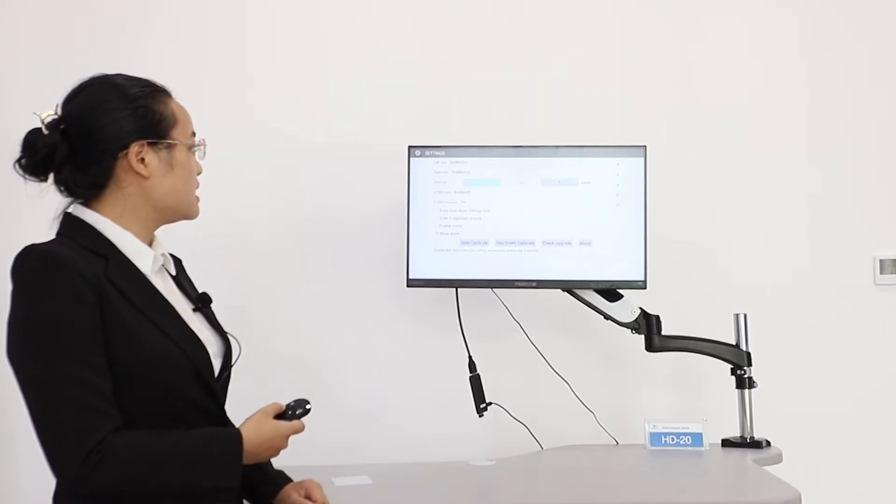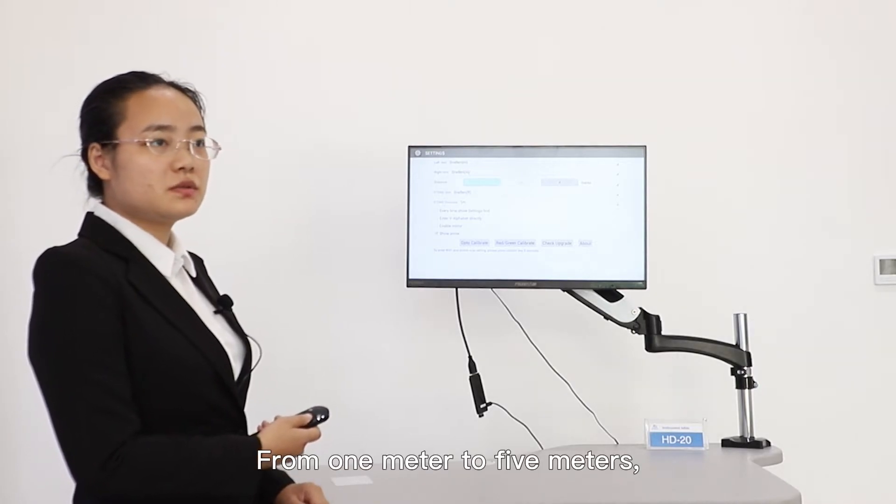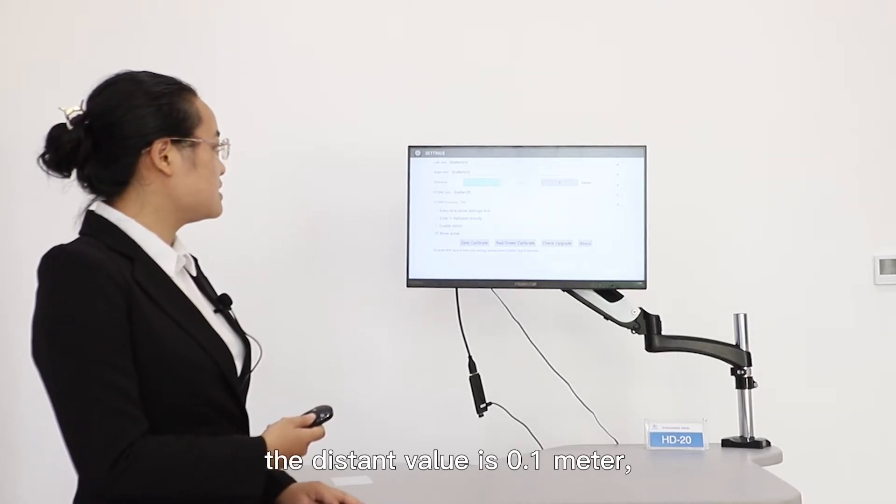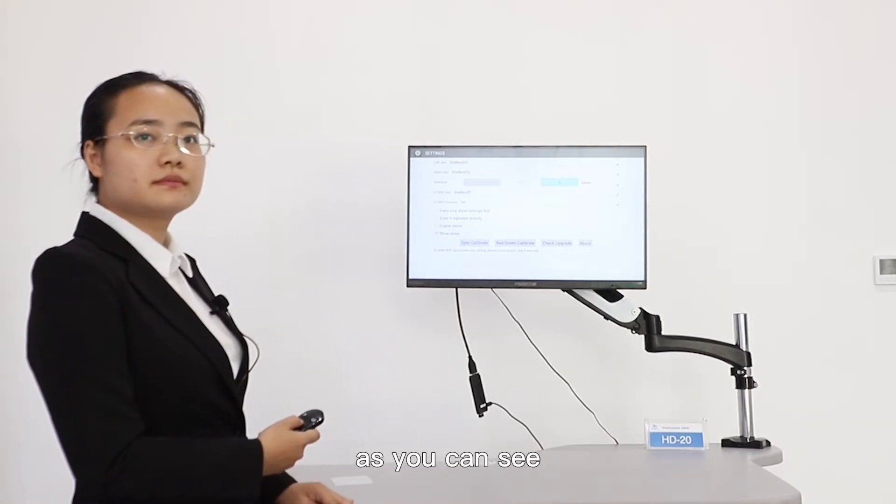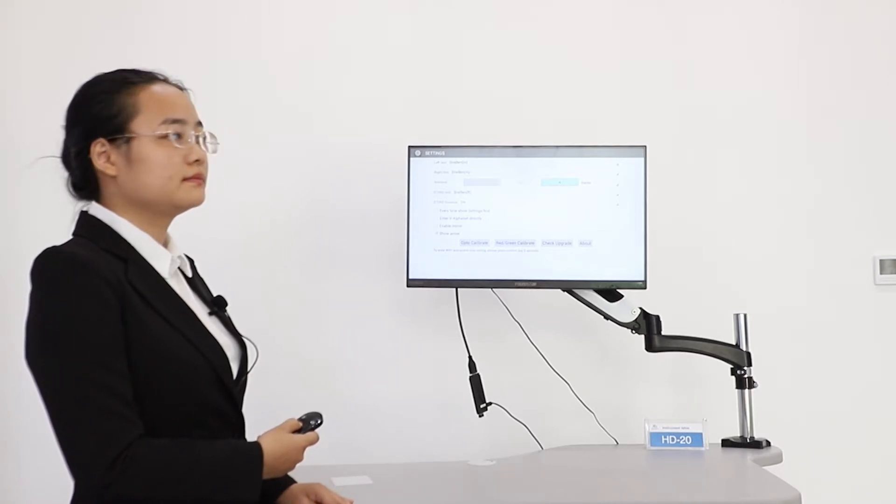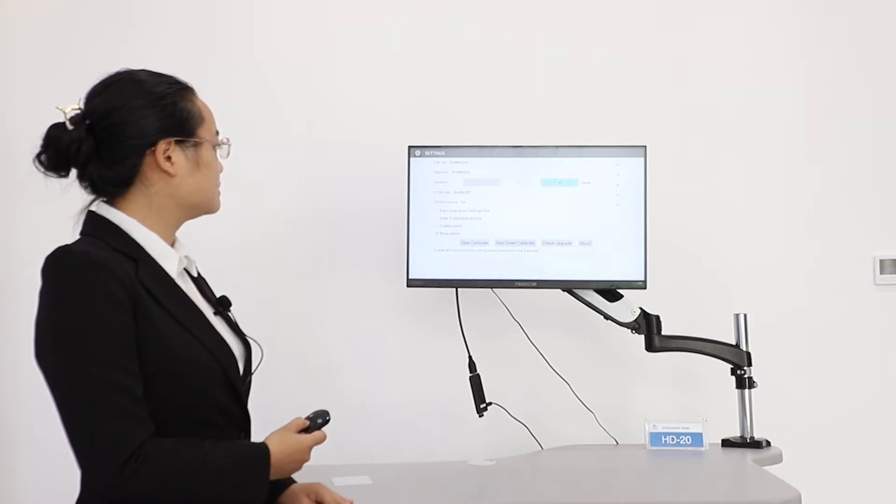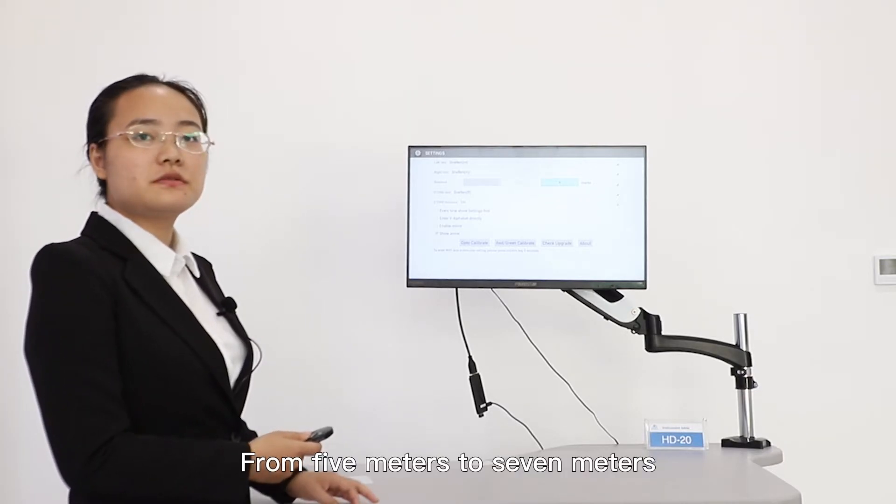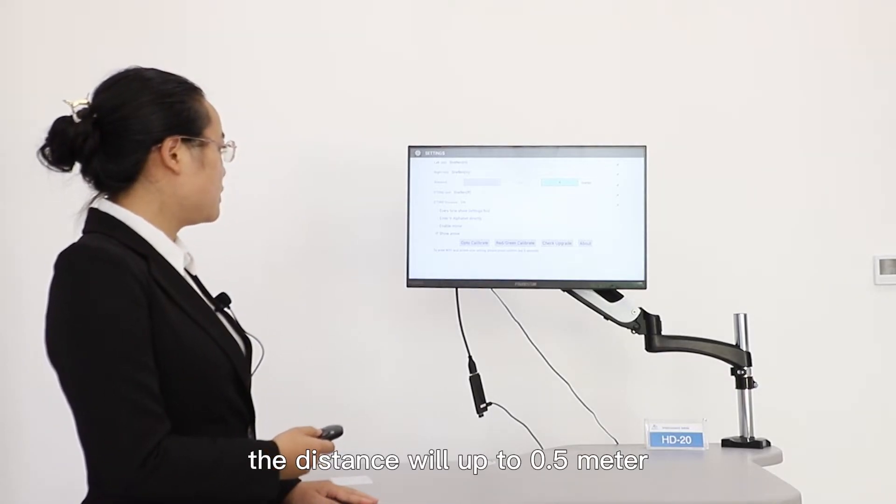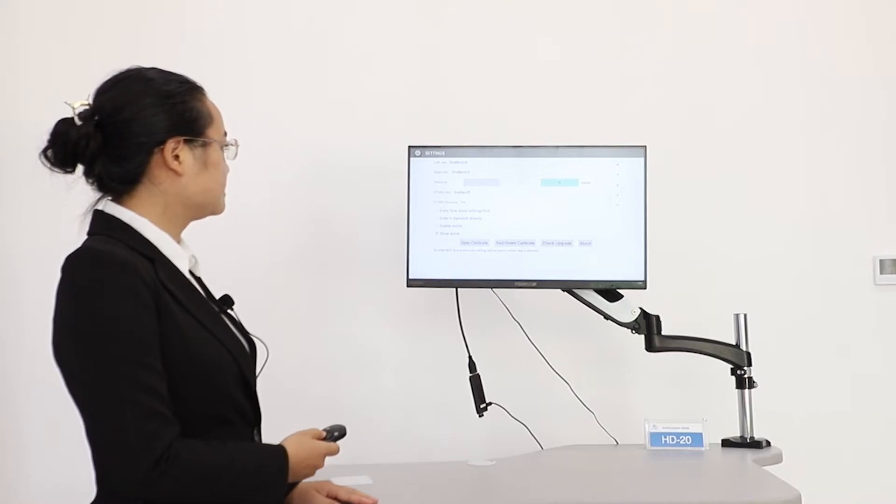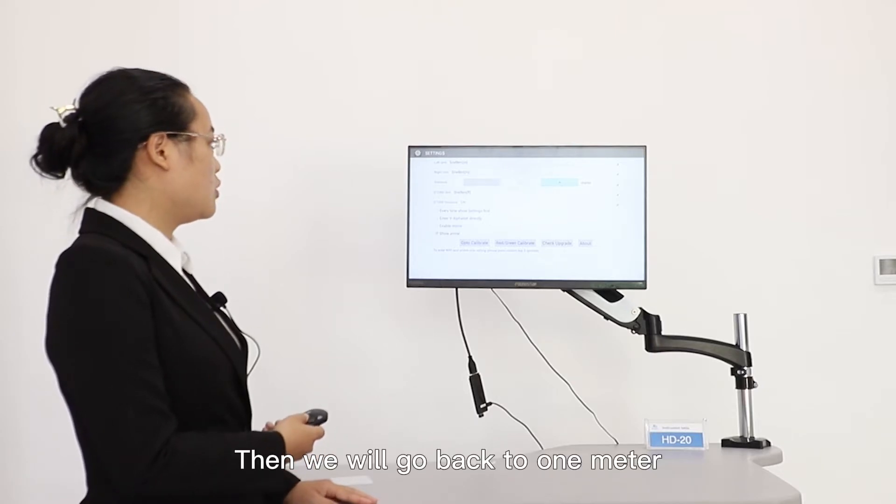For the working distance, it's from one meter to seven meters. From one meter to five meters, the distance value is 0.1 meters. From five meters to seven meters, the distance goes up to 0.5 meters, then you will go back to one meter.